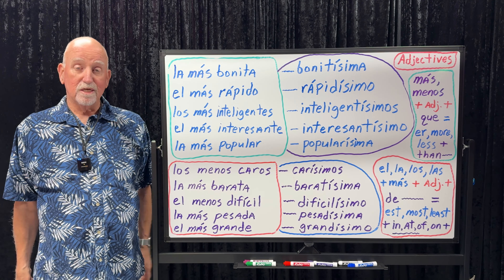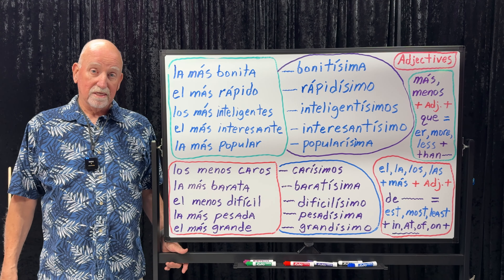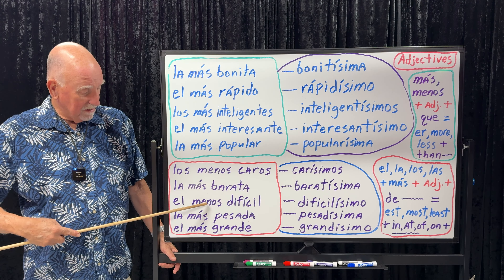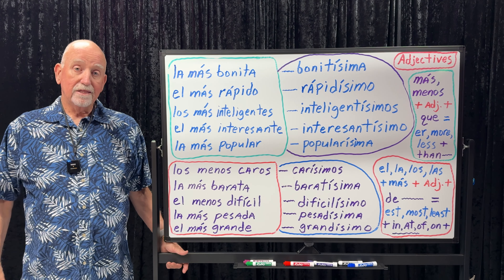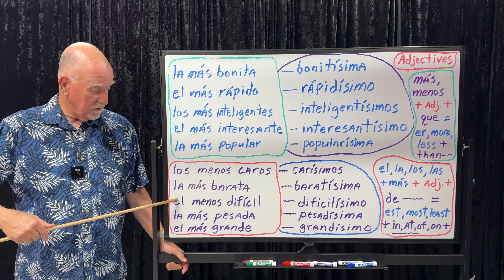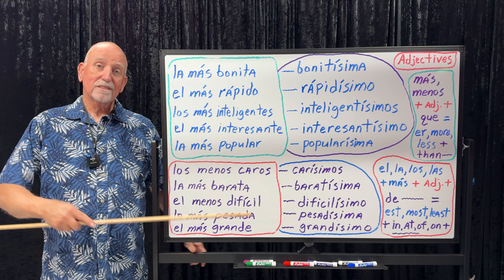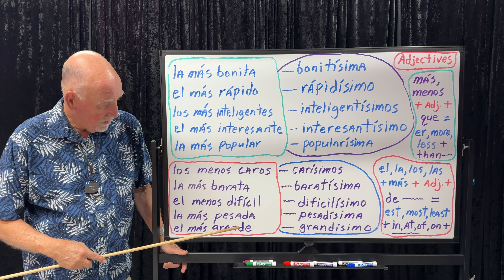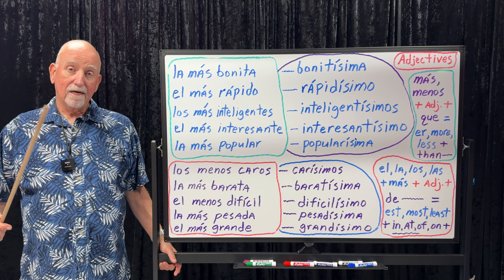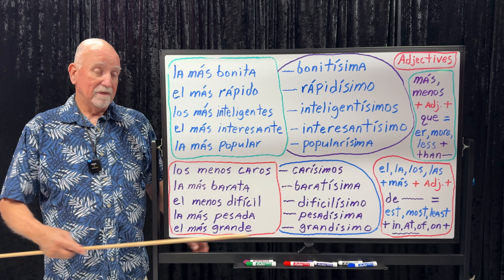Baratísima means it can't be any cheaper — está baratísima is really, really cheap. Están carísimos — they're really, really expensive, like the price has gone way up. Difícil is difficult; menos difícil is less difficult; el menos difícil is the least difficult. In the comparative, menos means less; in the superlative with the article, menos means least. If you want to say something is exceedingly difficult: dificilísimo. Pesada is heavy; más pesada would be heavier; la más pesada is the heaviest; and if something is exceedingly heavy: pesadísima.